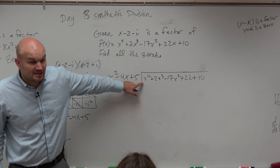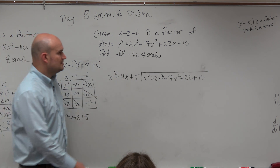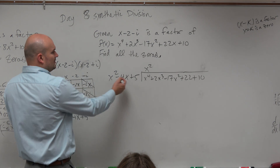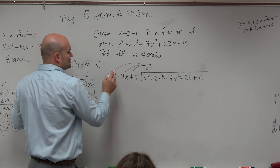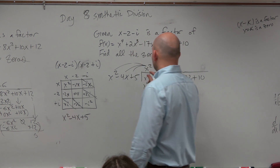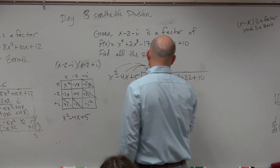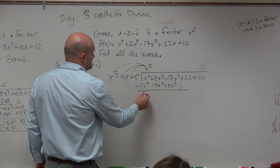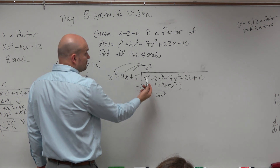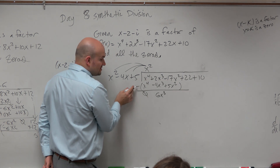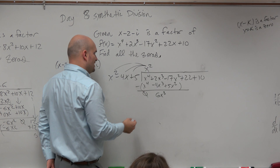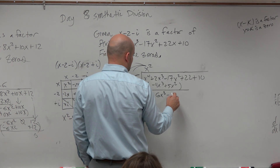We can't do synthetic division here because it's not linear. So long division: x squared divides into x to the fourth, x squared times. You've got to multiply x squared times everything. x squared times x squared is x to the fourth. x squared times negative 4x is negative 4x cubed. x squared times 5 is positive 5x squared. Put them in parentheses and subtract. You get zero. This becomes 6x cubed — just be careful, you're subtracting a negative. So negative 17x minus 5x is going to be negative 22x.